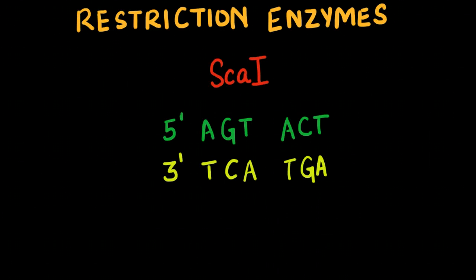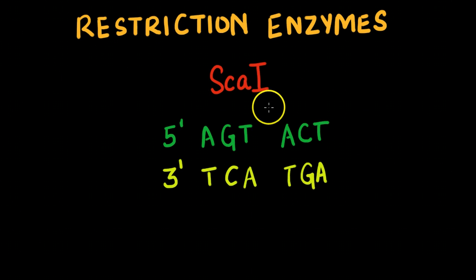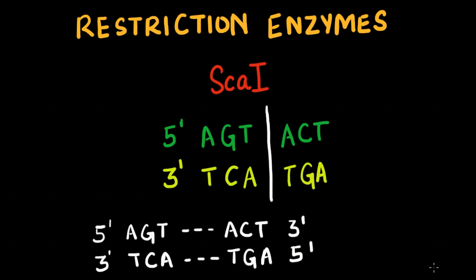An example of a restriction enzyme is ScaI. ScaI particularly recognizes the nucleotide sequence AGTACT. When ScaI comes in contact with this nucleotide sequence on a DNA, it specifically cuts between the T and A on the 5' strand as well as the A and T on the 3' complementary strand, resulting in two DNA fragments as seen here. The ScaI specifically recognizes the AGTACT sequence on a DNA and cuts it into two strands with blunt ends.